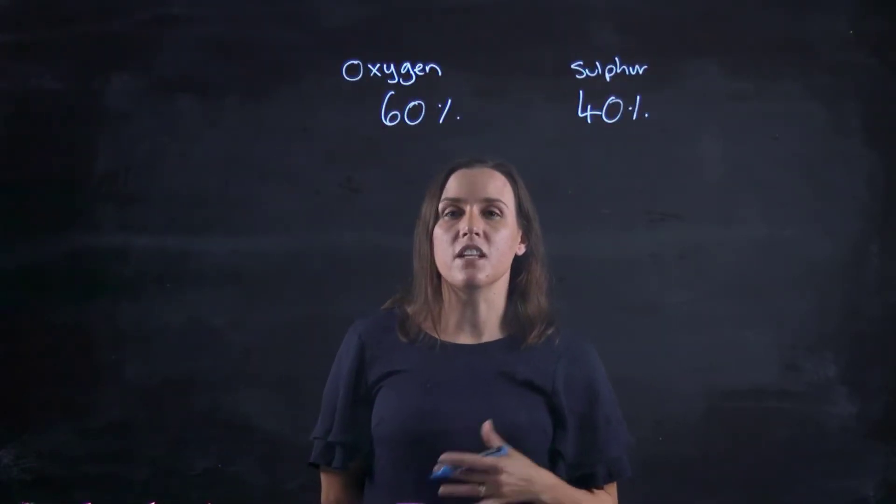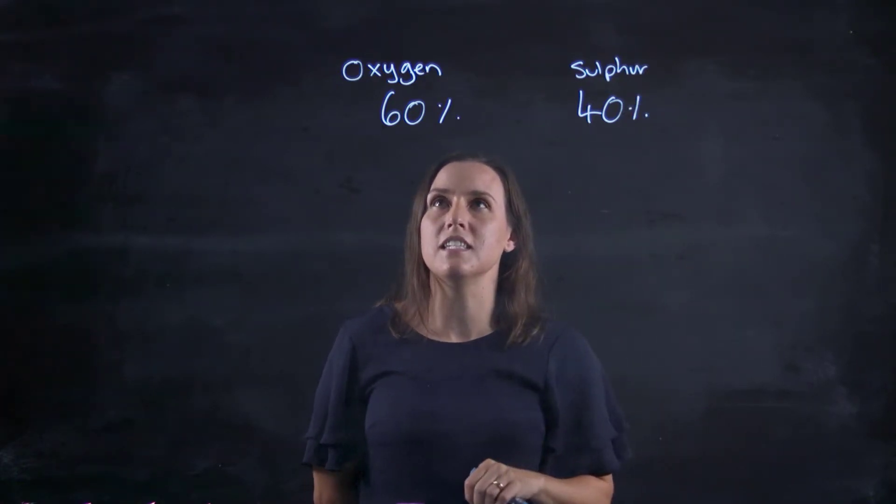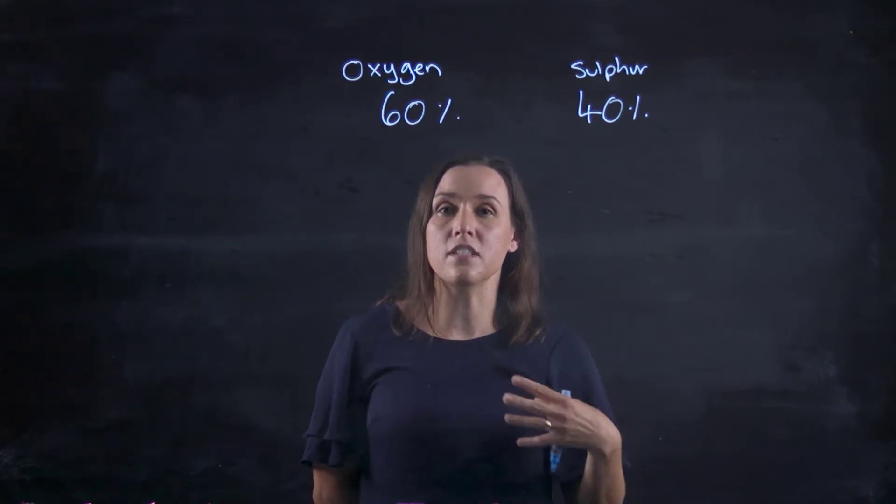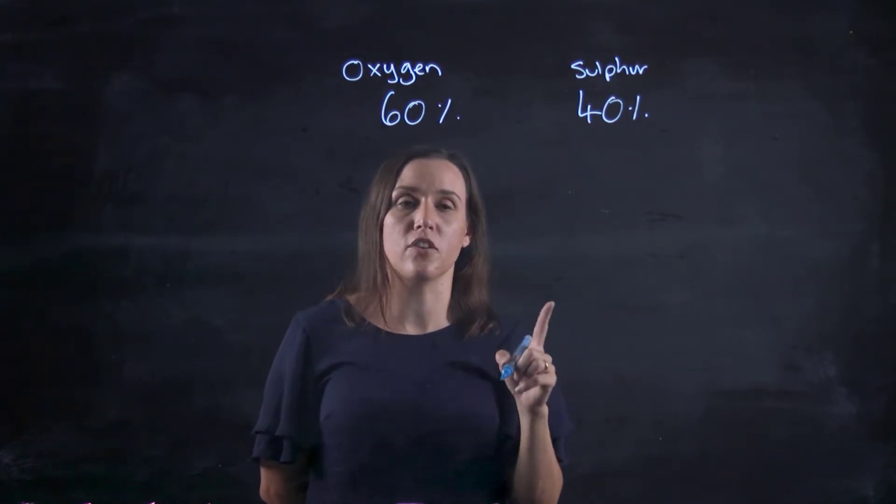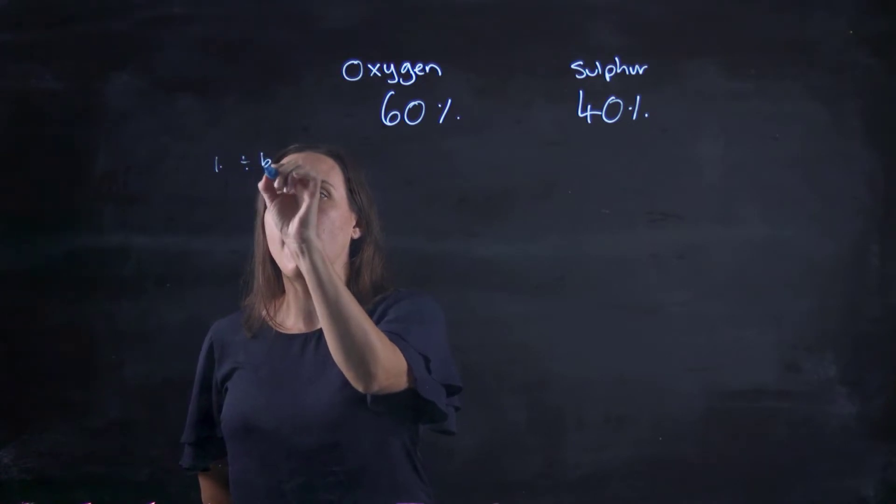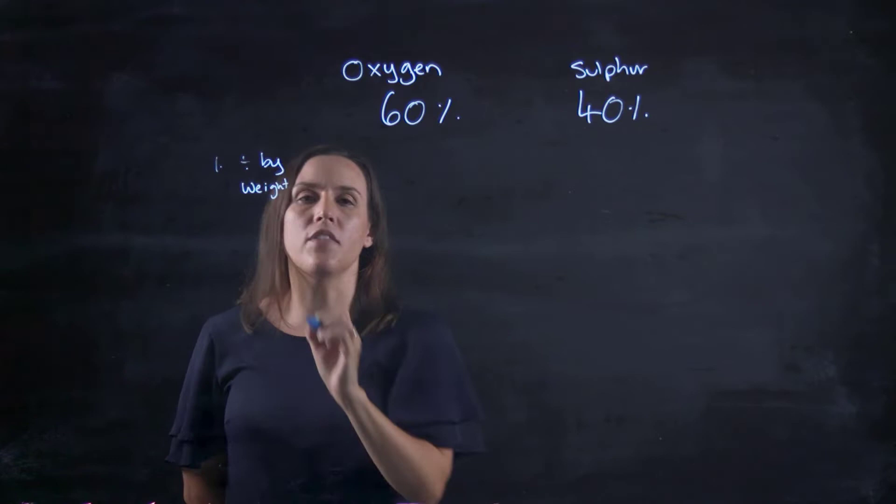So this question that I'm going to go through tells you that it's 40% sulfur by mass and 60% oxygen by mass. So the first thing we do is because it's by mass, we need to divide it by the atomic weight for each of those elements. So the first thing is divide by the weight of that element.